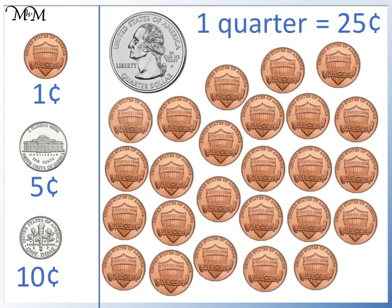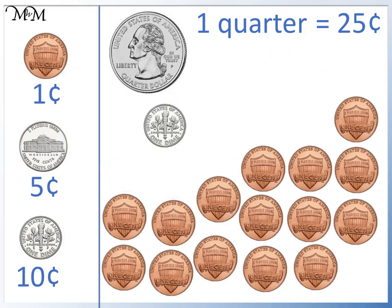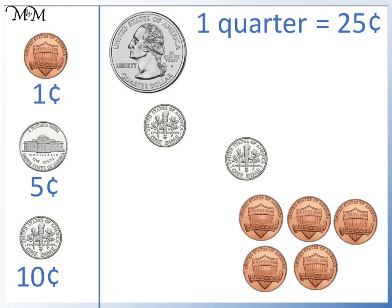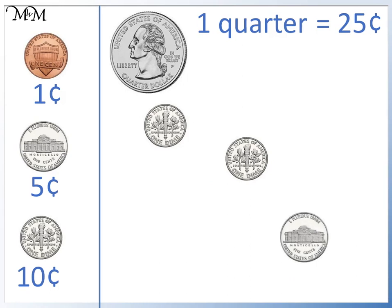We can swap these ten one cent coins for a ten cent coin, or one dime. We can swap these five one cent coins for a five cent coin, or one nickel. So one quarter is the same as two dimes and a nickel, because ten cents plus ten cents plus five cents makes twenty-five cents.